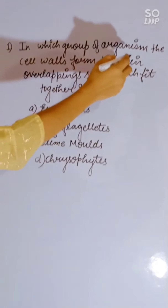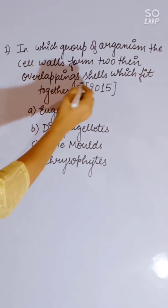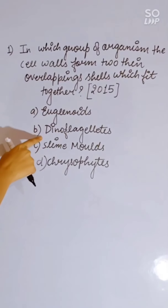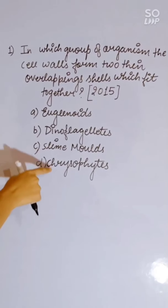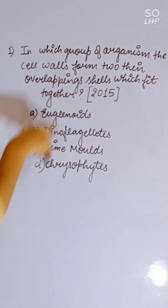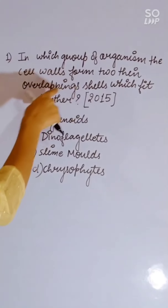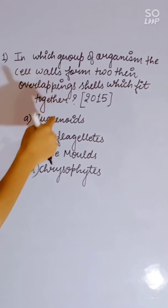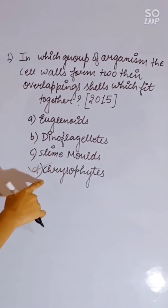In which group of organisms does the cell wall form two thin overlapping shells that fit together? Options: Euglenoids, Dinoflagellates, Slime molds, or Chrysophytes. Chrysophytes have thin overlapping cell walls. Correct answer is Chrysophytes.